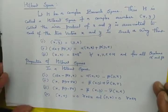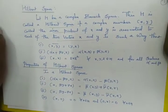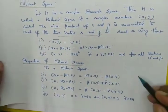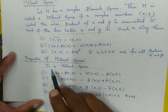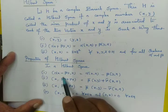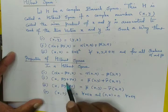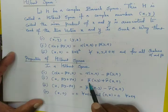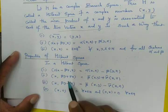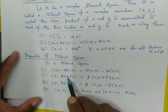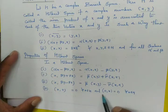Some properties of Hilbert space — questions may come from this. The properties are: (1) (αx − βy, z) = α(x, z) − β(y, z); (2) (x, βy + γz) = β̄(x, y) + γ̄(x, z); (4) (x, 0) = x for all x in H; and (x, 0) = 0 for all x in H.